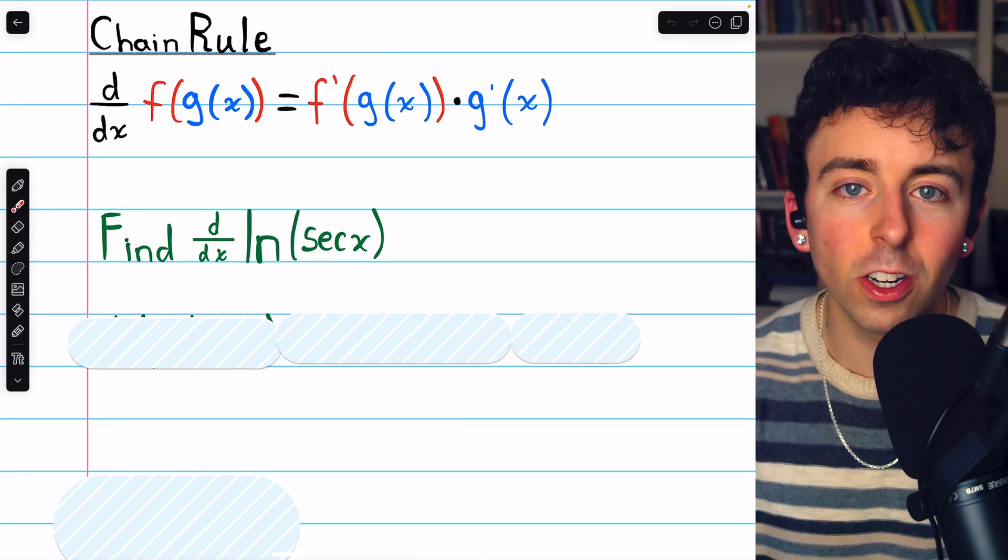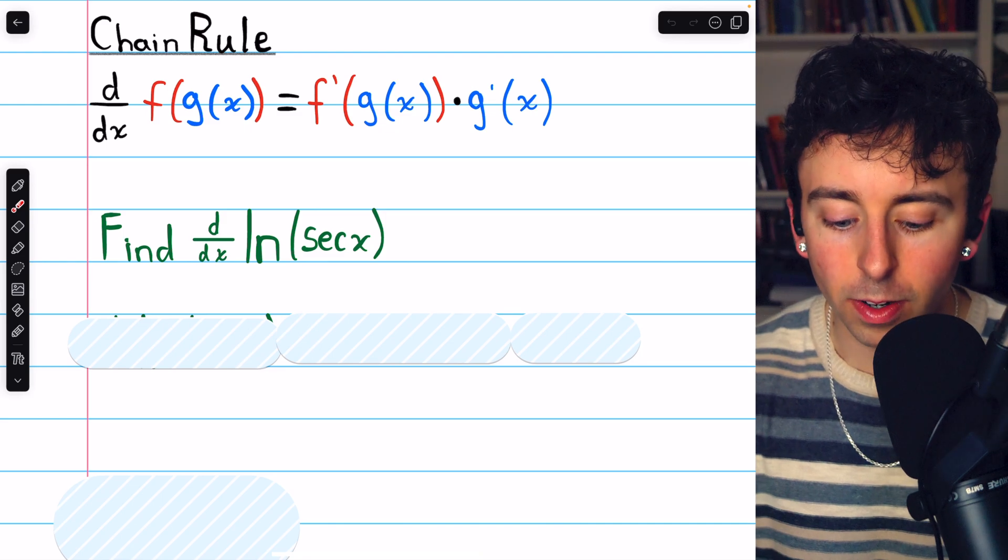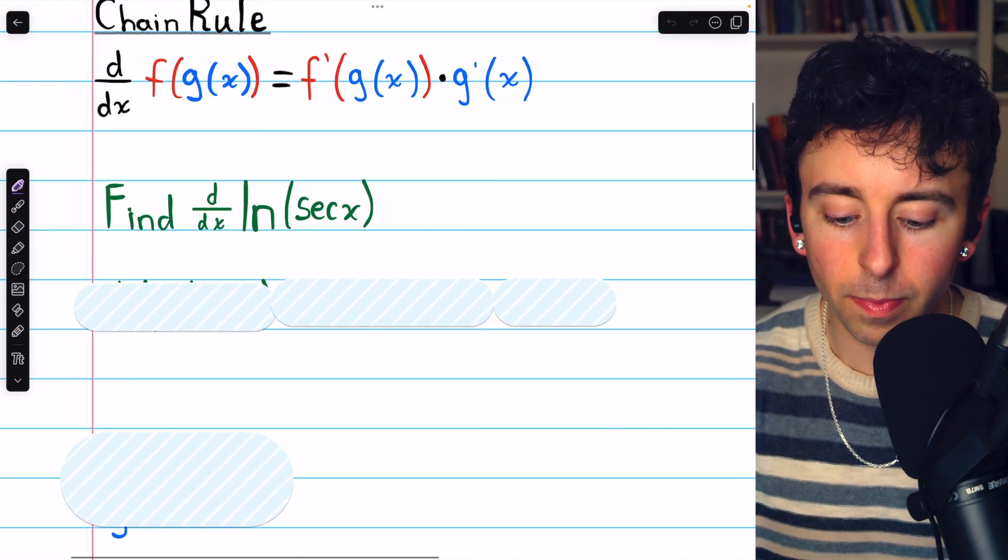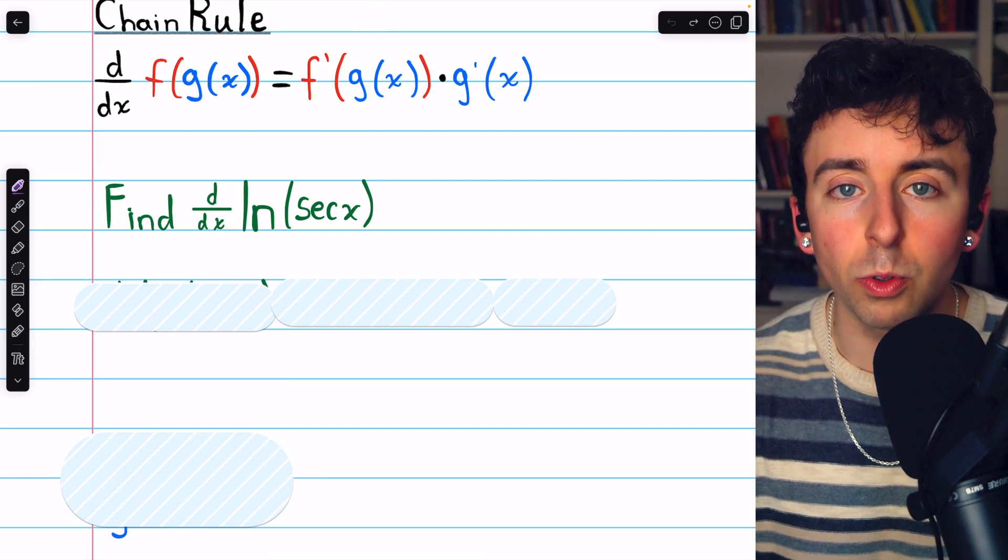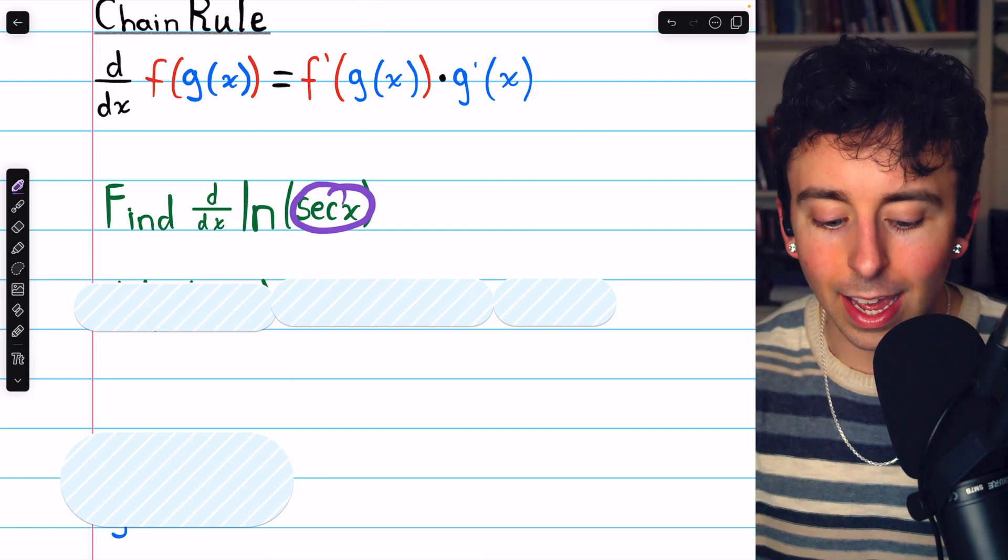f is the outside function, g is the inside function. In our case, f, the outside function, is this natural log. And the inside function, which we call g, is secant x.